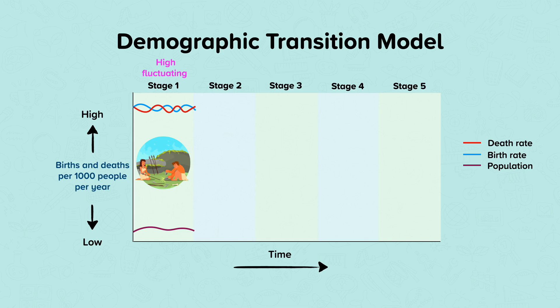At the same time, there was no medical way of controlling how many children families had, and children were a benefit because they could help farm or hunt. Families would have even more children to replace those who died in infancy. Most nations have passed through this stage already, and only a small number of isolated communities, for example in the rainforest, would be described as being in this stage today.